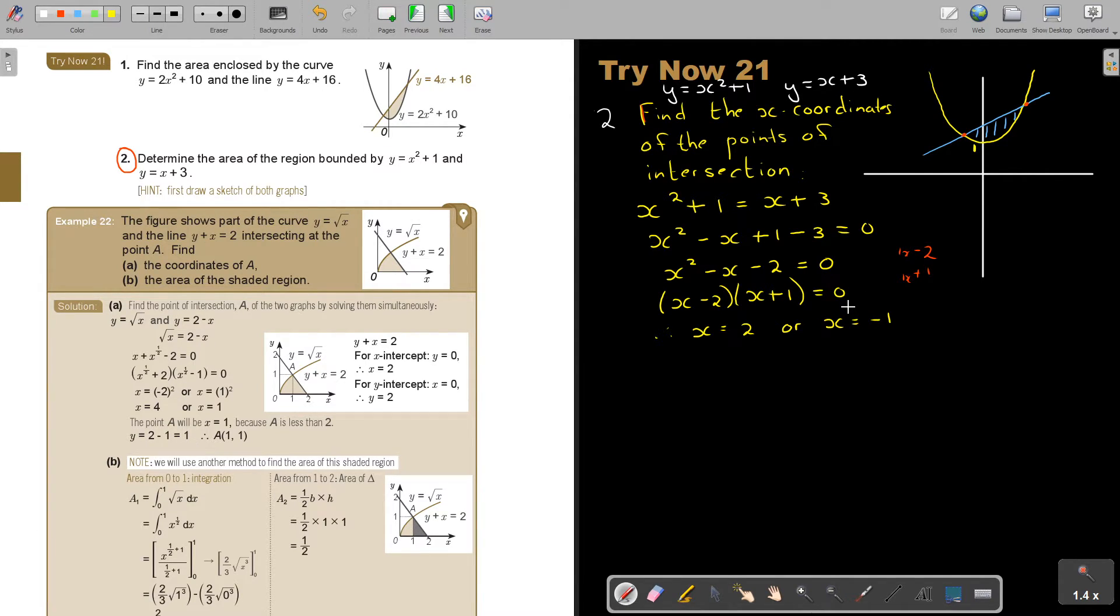So basically, what is it saying to me? That this is negative 1, and this is 2. And from the sketch, you can see now which one is on top. It's the straight line. So, if I'm going to do that one, I'm going to say area, enclosed area. And I'm going to say 2 and negative 1.